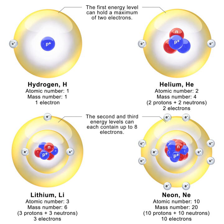In nuclear fission, the absorption of a neutron by a heavy nuclide — e.g., uranium-235 — causes the nuclide to become unstable and break into light nuclides and additional neutrons. The positively charged light nuclides then repel, releasing electromagnetic potential energy.